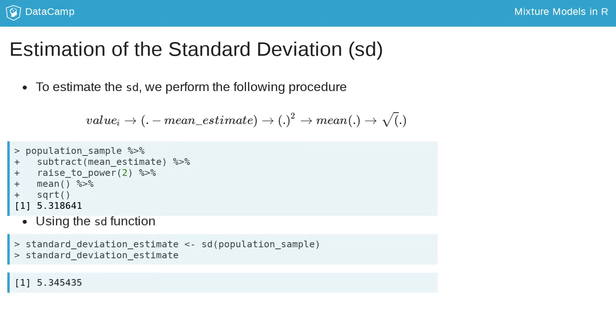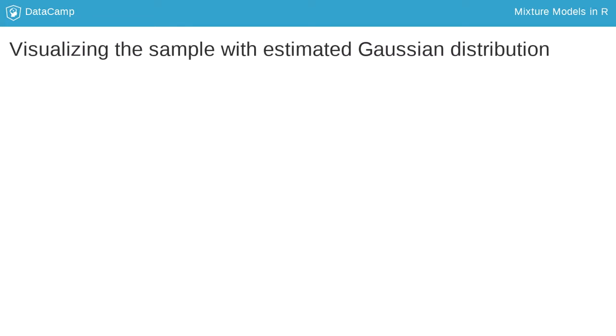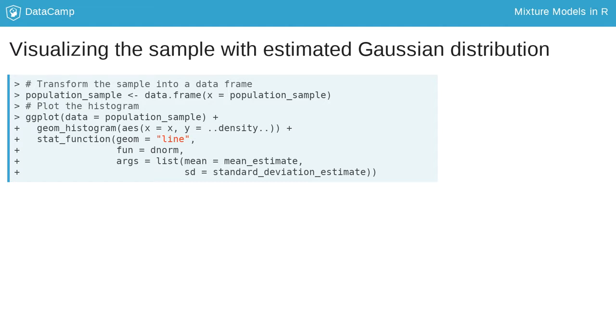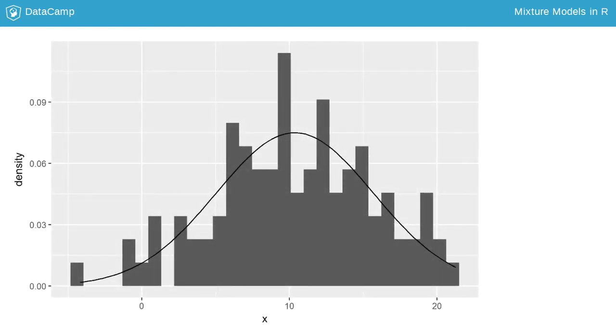Observe that the estimated standard deviation is quite similar to the real value of 5. To create a histogram in R, we use the function geom_histogram, specifying y-axis equals density to scale it into frequencies. Observe we put the aesthetic inside geom_histogram. We also add the estimated curve using a stat function, specifying that the geometry is a line, the function is the density of the Gaussian, and the arguments correspond to the estimated mean and standard deviation. See how the estimated distribution fits quite nicely to the observations.